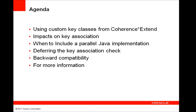First, I'll be describing this new feature — the ability to define custom key classes in the Coherence Extend client in 3.7.1 without needing to define these classes in the Coherence cluster. Next, I'll be talking about how key association is handled differently compared to prior releases. There are still use cases where a parallel Java class implementation is required; I'll be going over those. Next, I'll talk about how to specify key association processing to work as it does in earlier releases, and what happens when Extend clients from older release versions connect to a 3.7.1 or later Coherence cluster. Finally, I'll provide some pointers for further details about this feature and Oracle Coherence in general.